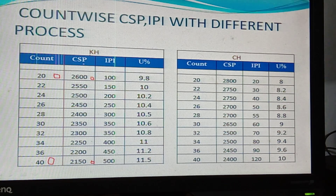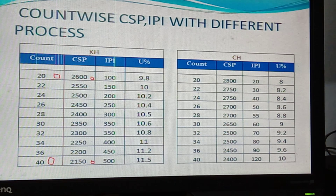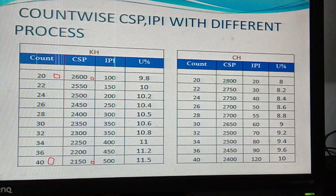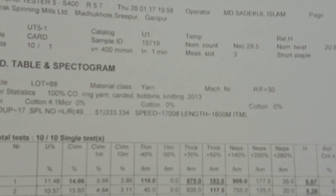CSP count is 10 products and IPA — imperfection index — is the 3 parameters of the improvement: thin minus 50, and thick plus 50, and neps 200%. I am going to show you in the report.